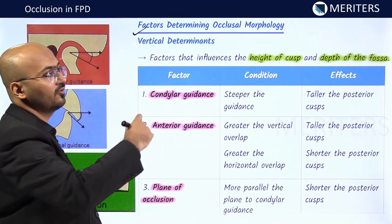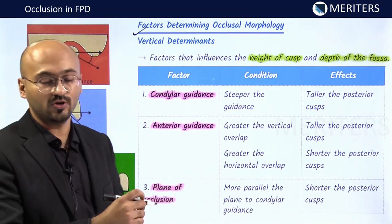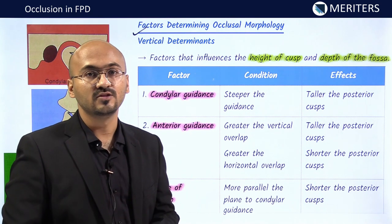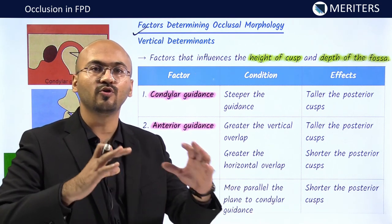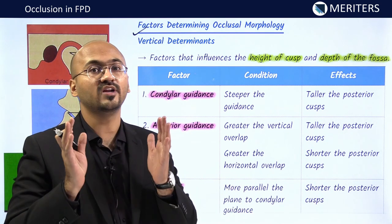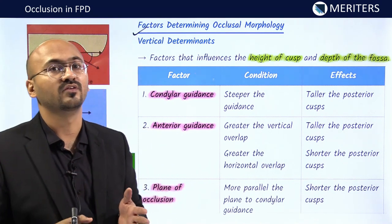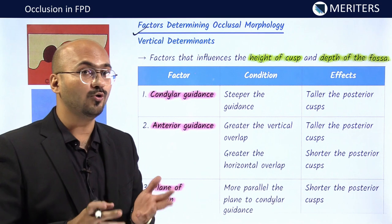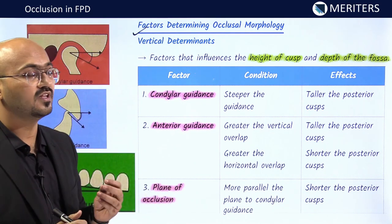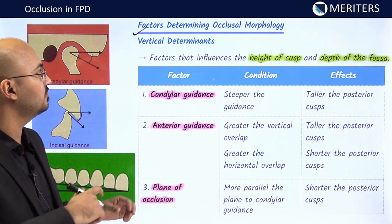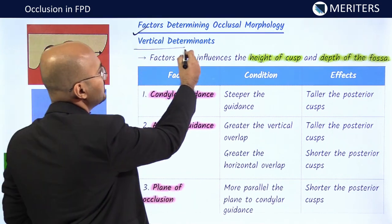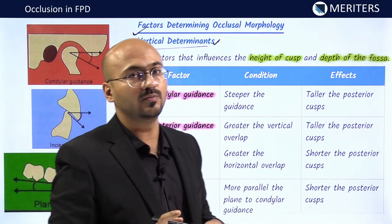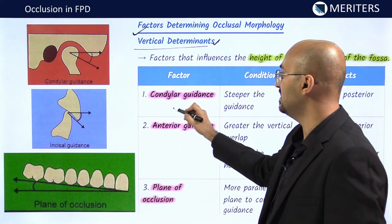Now let's look at the factors that determine occlusal morphology. When you rehabilitate a patient with new teeth, it is important to understand what kind of occlusal scheme and occlusal anatomy you are going to provide. The cusp-fossa relationship is what occlusion is all about. There are vertical determinants and horizontal determinants that govern this.